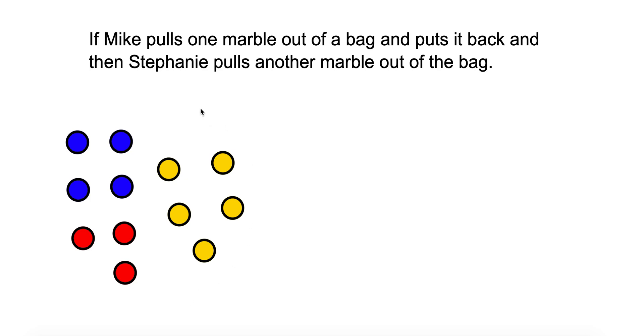Well Mike has this to choose from, and since he puts it back, Stephanie has the same thing to choose from. So this would be independent because it's put back. It's the same probability.